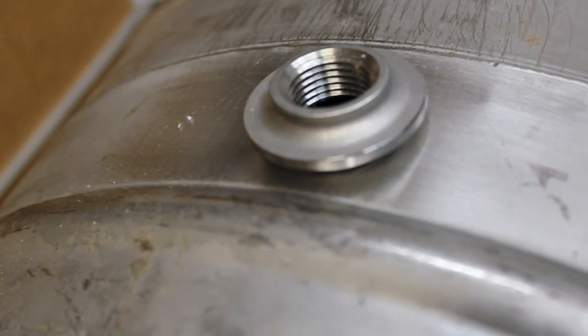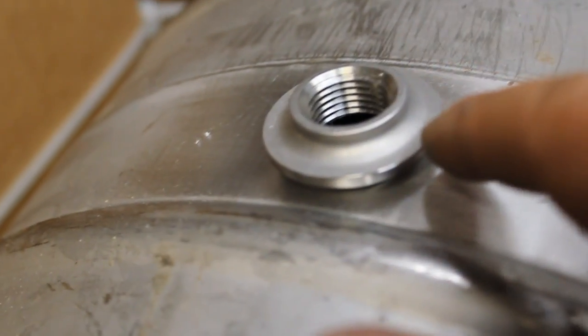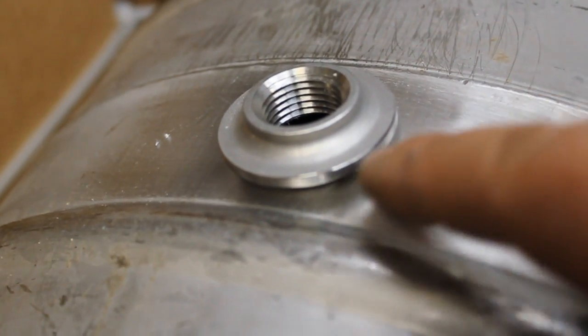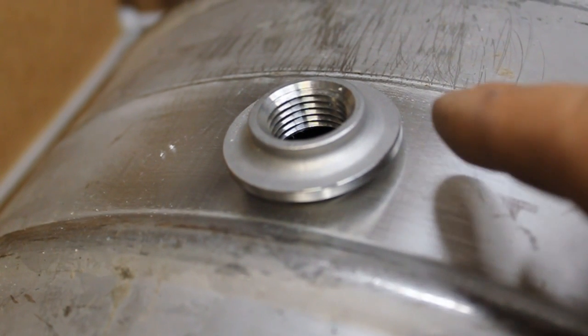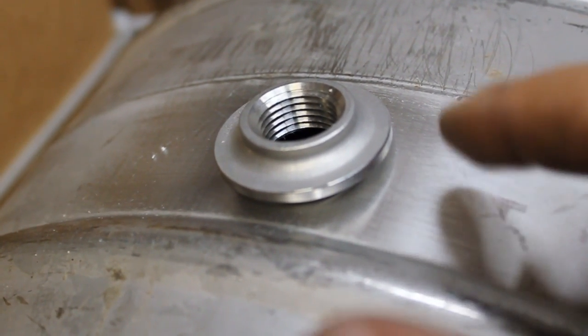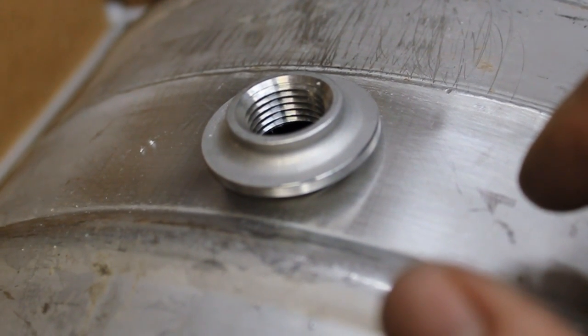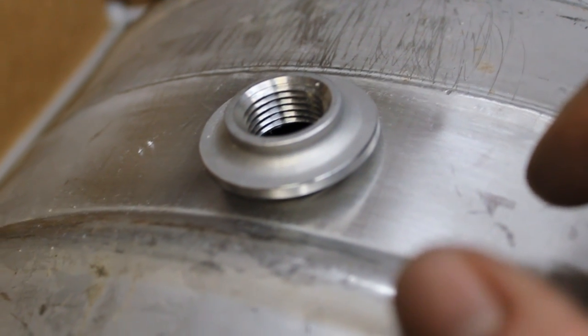You'll notice when the solder starts liquefying, this is going to drop down into the hole. You might want to apply a little bit of extra solder if you see any gaps just for cosmetic purposes. Once this thing drops down, you're going to have that entire ring of solder making good contact with both surfaces. You're pretty much leak free at that point.